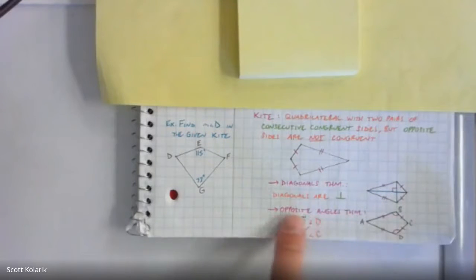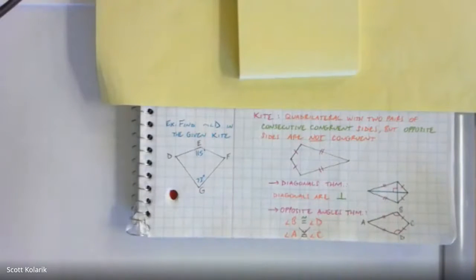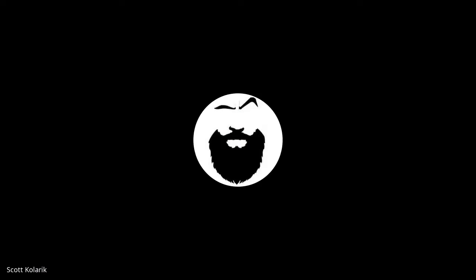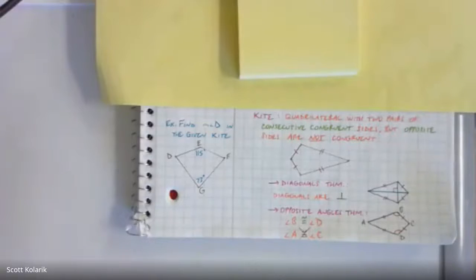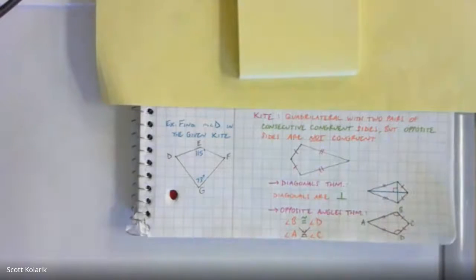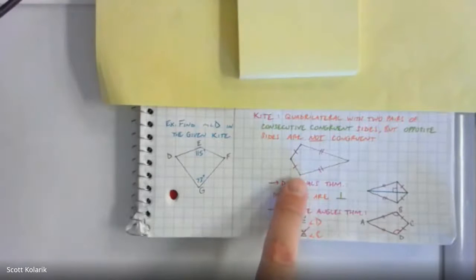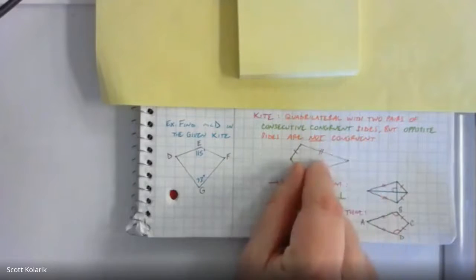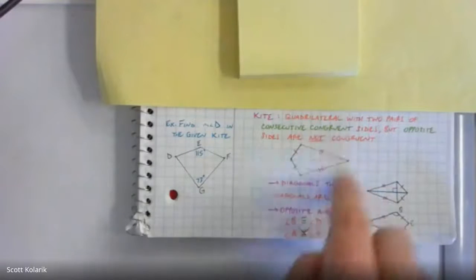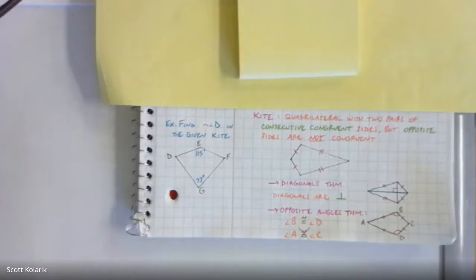The second theorem involves opposite angles — but we have to be careful here because this is not a parallelogram. In a kite, there is only a single pair of opposite angles that are congruent to one another. This takes some practice to spot because kites can be oriented many different ways — you can stretch, squash, or rotate them, making it more challenging to identify the relevant pieces.